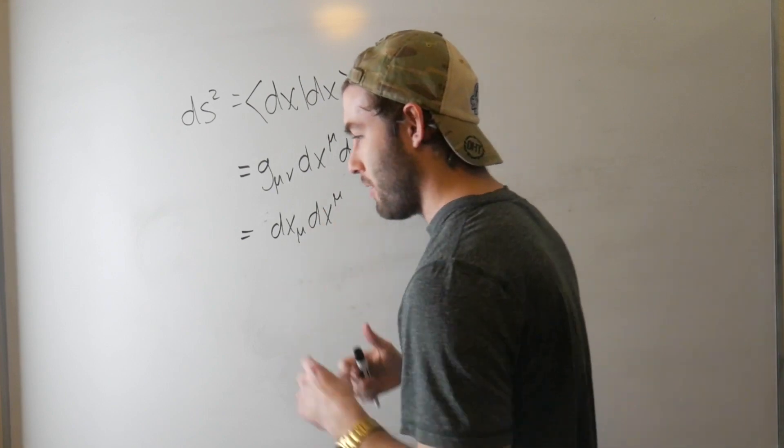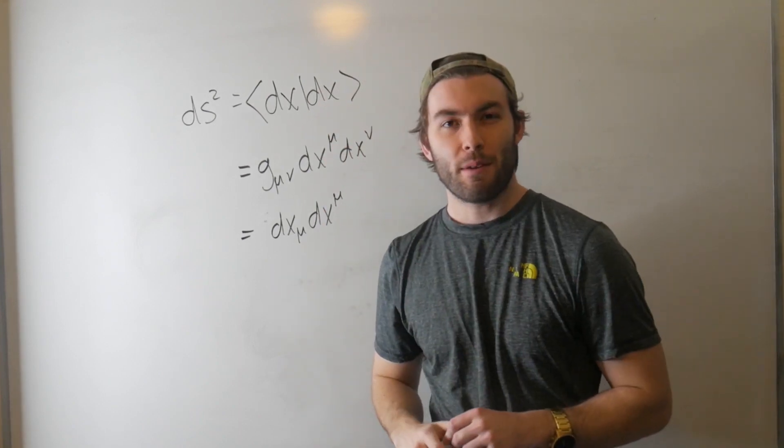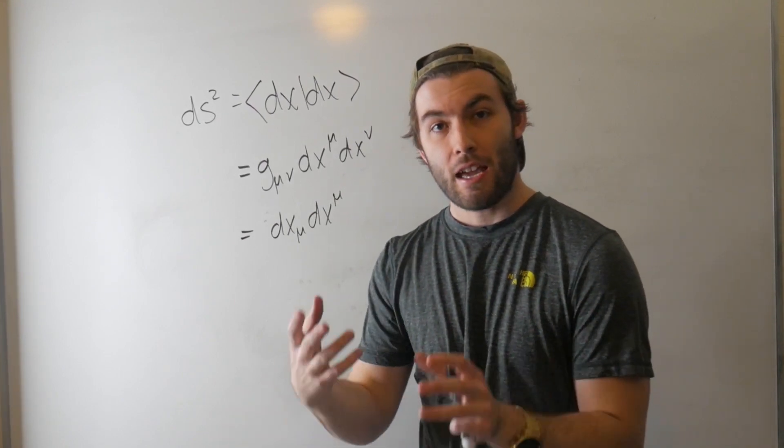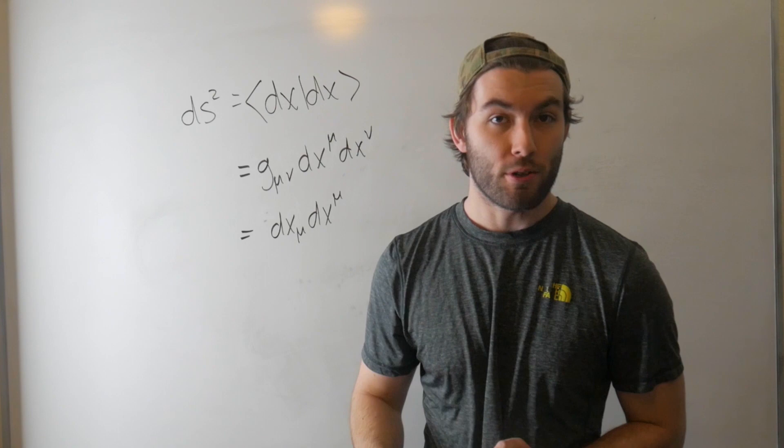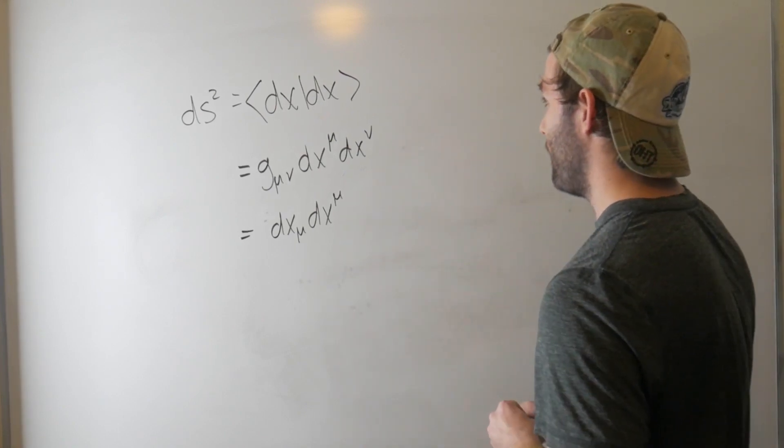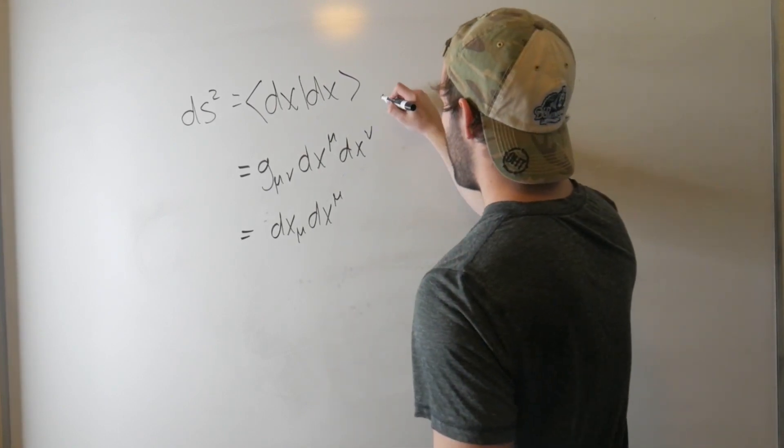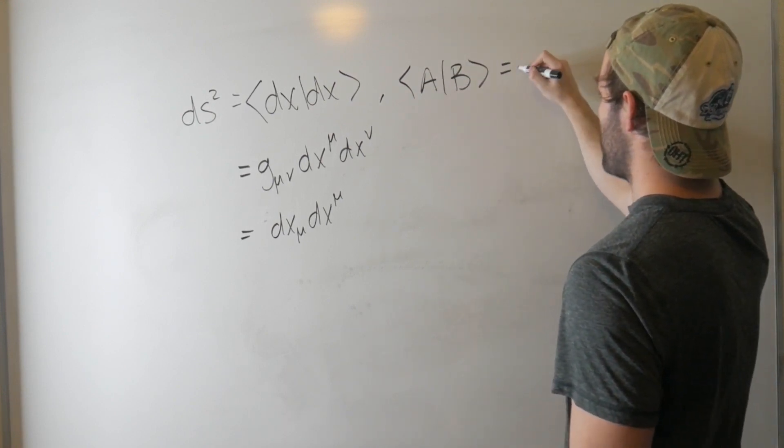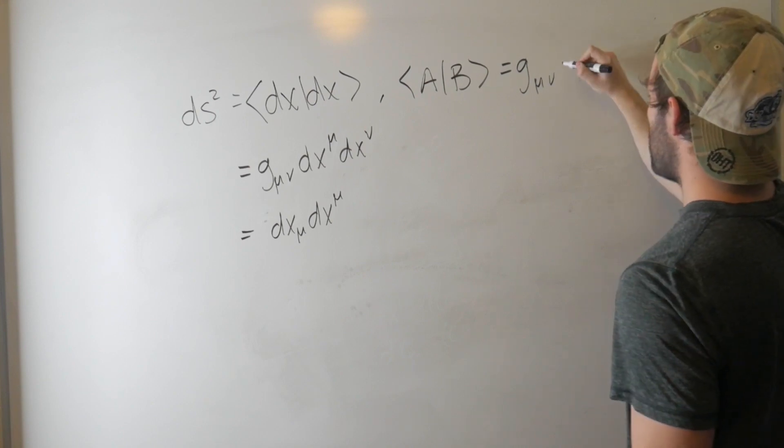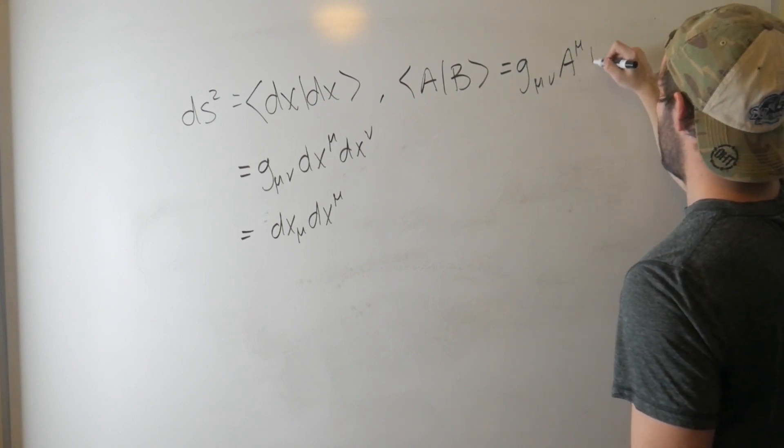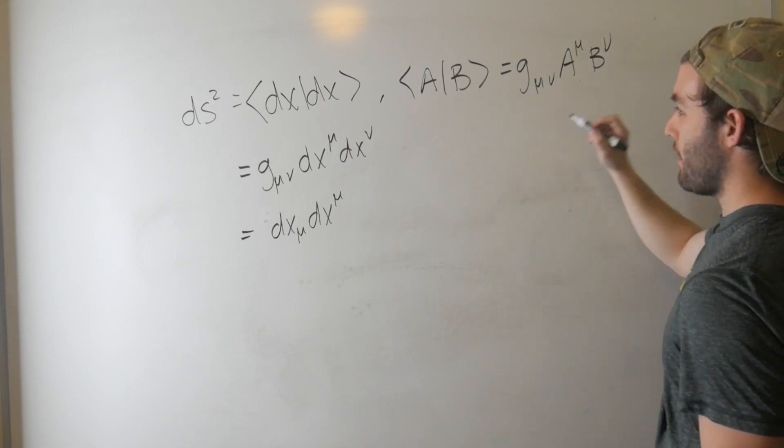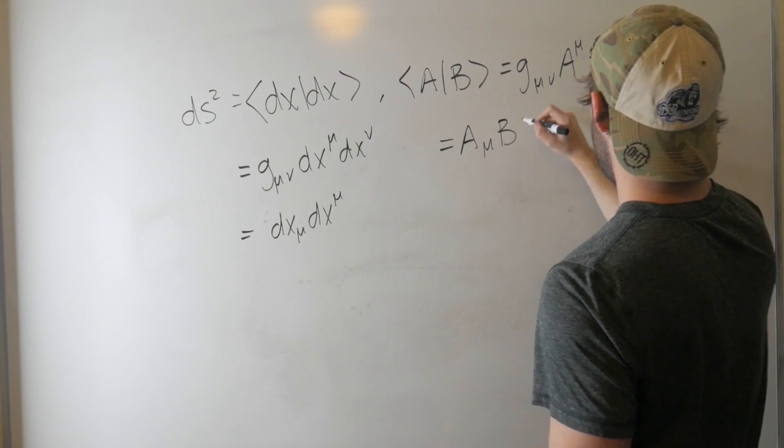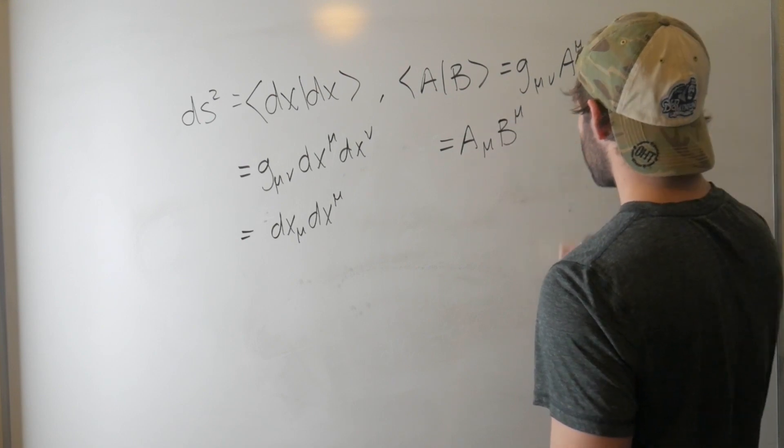And this kind of, this really started to make sense for me because in things like quantum mechanics, when you have a ket, that ket lives in a Hilbert space, and its associated Bra lives in a dual Hilbert space. So this is kind of one way of looking at that. So similarly, any vector and its dual can be expressed in terms of this. So yeah, <a|b> is equal to g_μν a^μ b^ν, which is equal to <a_μ|b^μ>. Awesome.